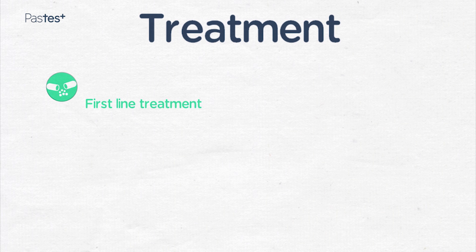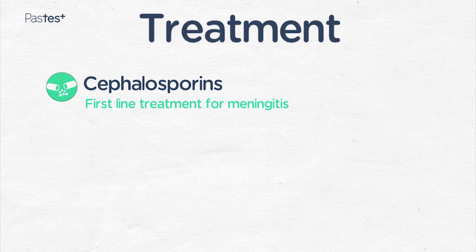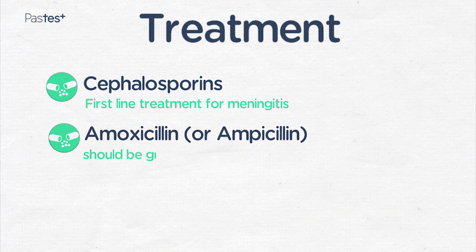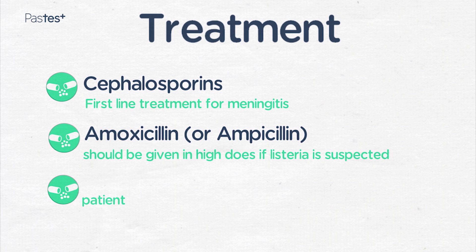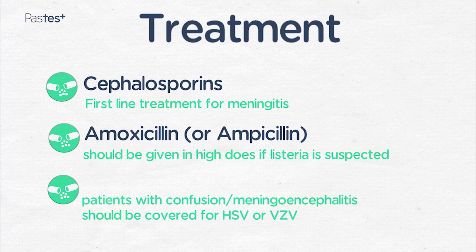Treatment for meningitis: first line is a cephalosporin. Remember that amoxicillin or ampicillin should be given in high doses if listeria is suspected, because it is inherently resistant to cephalosporins. In addition, patients with confusion or meningocytosis should be considered and covered for HSV (herpes simplex virus) or VZV (varicella zoster virus). This is usually treated with acyclovir, 10 mg per kg TDS.